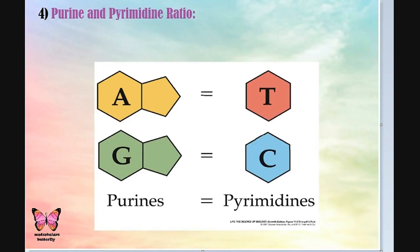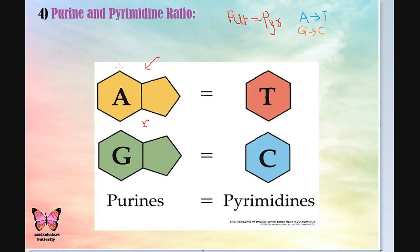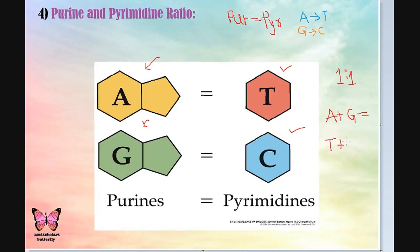Purines always bind to pyrimidines — that means adenine always binds to thymine or uracil, and guanine always binds to cytosine. Adenine and guanine are purines and have a double ring structure, whereas thymine and cytosine are pyrimidines and have a single ring structure. The ratio of purines to pyrimidines is exactly 1:1 — that means however much adenine and guanine are present, that same amount of thymine and cytosine will be present, so they are equally present on the strands.